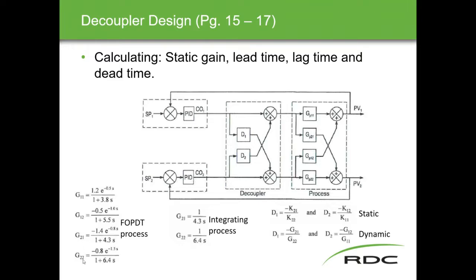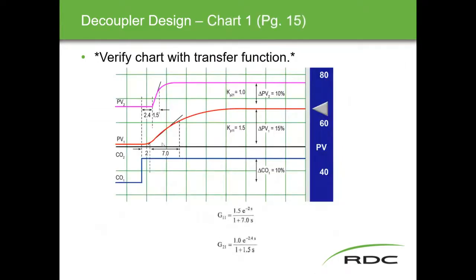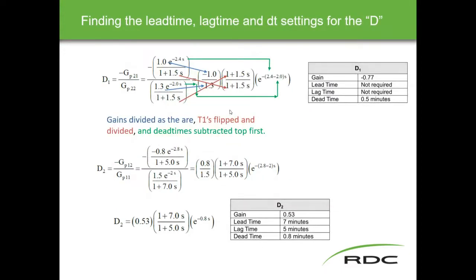These numbers are process-related, derived from tests: PV1 with controller one, PV1 with controller two, PV2 with controller one, PV2 with controller two, and so on. We start with step response charts just like before to get the transfer functions. A 10% controller output change producing a 10% PV change gives a gain of one; a 10% change producing a 15% change gives a gain of 1.5. Draw your tangent line, find the 63.2% point, and get all your values to fill in the transfer function.